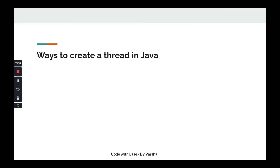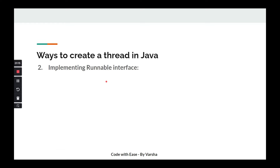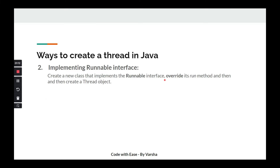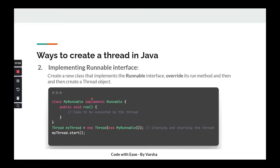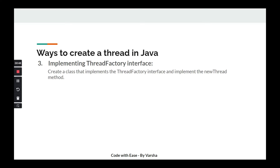What are the ways to create a thread? We know we can extend the Thread class and override the run method with our logic. We also know another way: implementing the Runnable interface where we again override the run method. Now we introduce the third way — using the ThreadFactory interface. So far we have mostly used the Runnable interface, but now we also know we can create threads using the ThreadFactory interface.